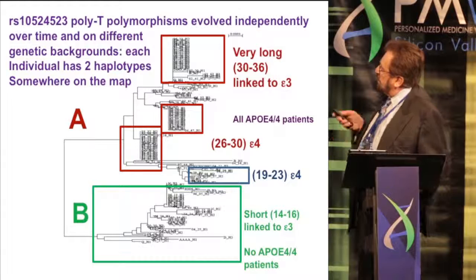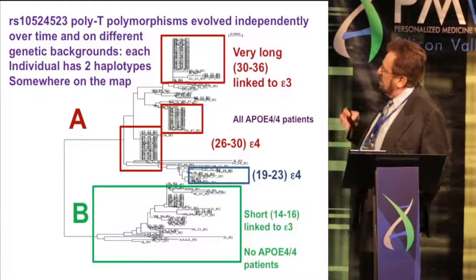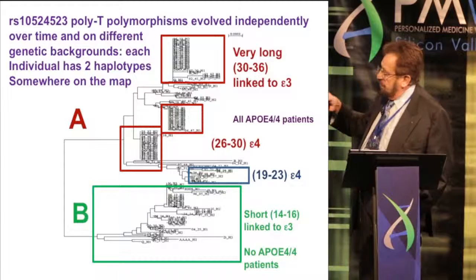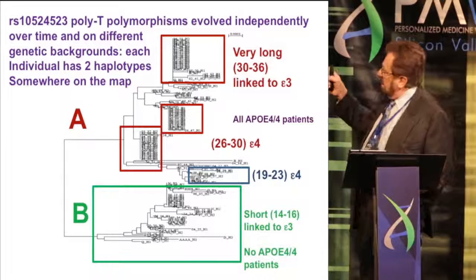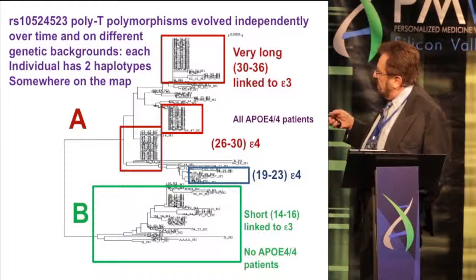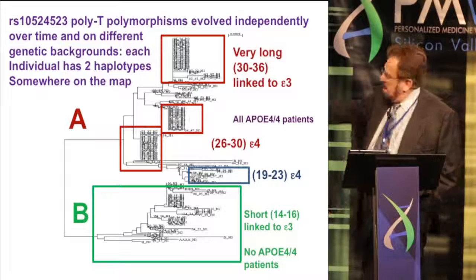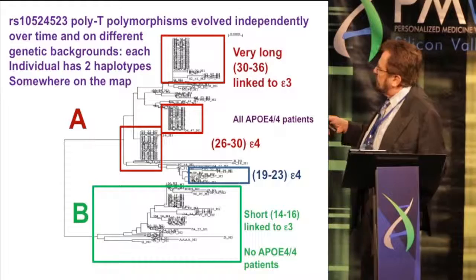At this individual locus, called the 523 locus, the poly T polymorphisms evolved independently over time on different genetic backgrounds, but each individual used in this experiment has two haplotypes somewhere on the map. Each line there represents an additional person who has that exact genotype, or that exact sequence.